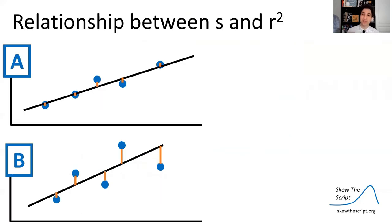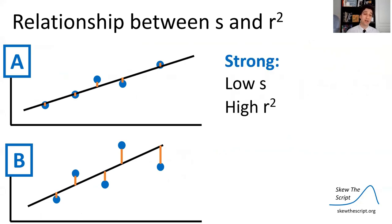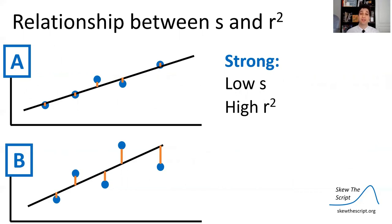Let's talk about the relationship between the standard deviation of residuals and R-squared. For a strong relationship, we have a low standard deviation of residuals — typical residual length is low — and a high R-squared. For a weak correlation, we have a high standard deviation of residuals with a lot of typical variation, and a low R-squared close to 0.